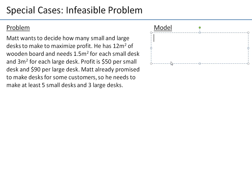Consider the following problem. Matt wants to decide how many small and large desks to make in order to maximize the total profit. He has some limited material — wooden board — and he has only 12 square meters of it. He needs 1.5 square meters for each small desk and 3 square meters for each large desk. He knows the profits for small and large desks, and he already promised some customers to make desks, so he needs to make at least 5 small desks and at least 3 large desks. He might make more to sell and make more profit, but he needs at least this.